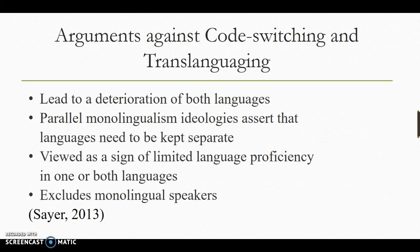Arguments against code-switching and translanguaging: these arguments hold that they lead to a deterioration of both languages. Parallel monolingualism ideologies assert that languages need to be kept separate. Code-switching and translanguaging are viewed as a sign of limited language proficiency in one or both languages.